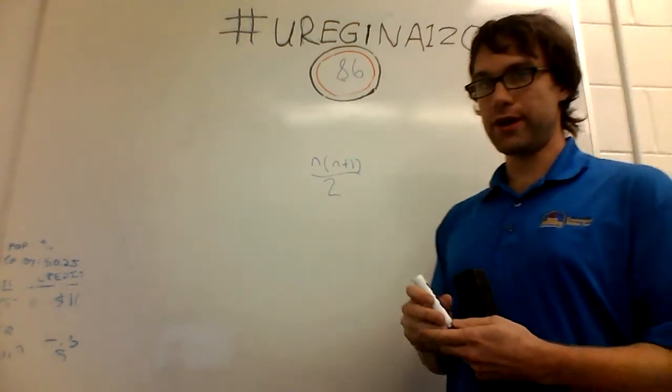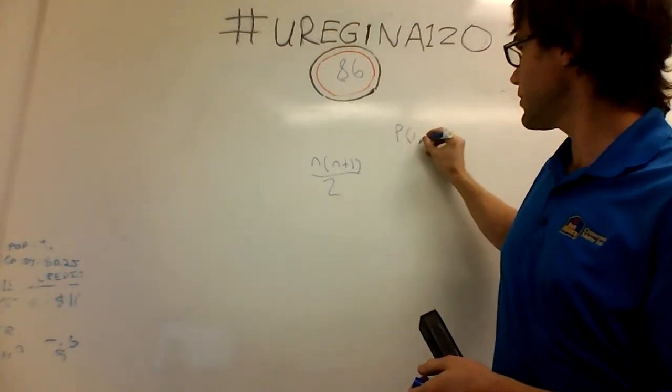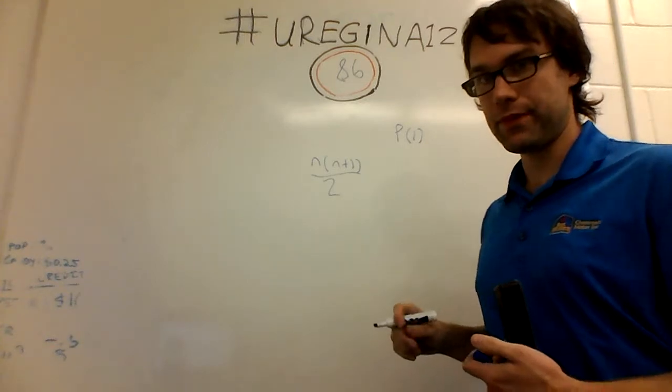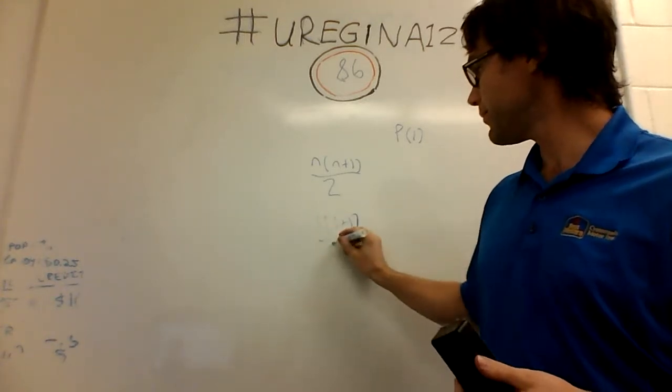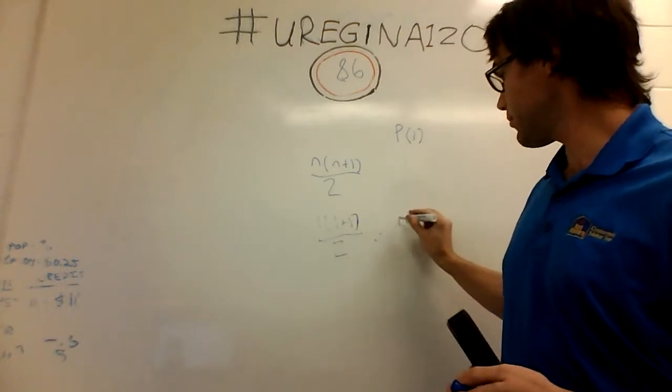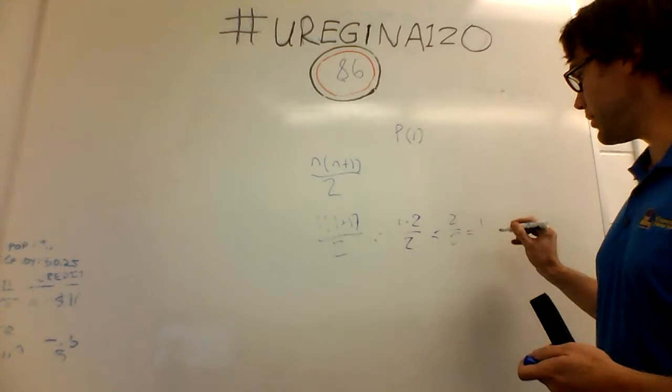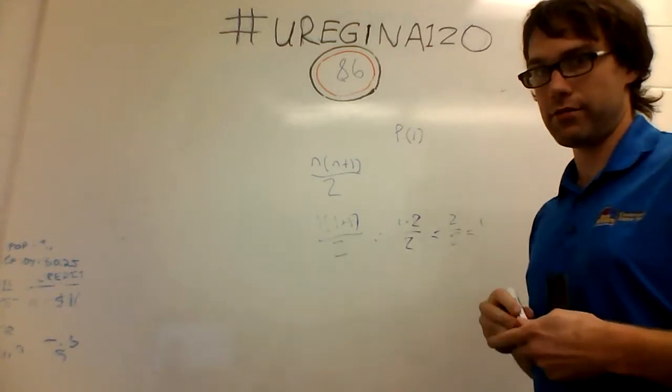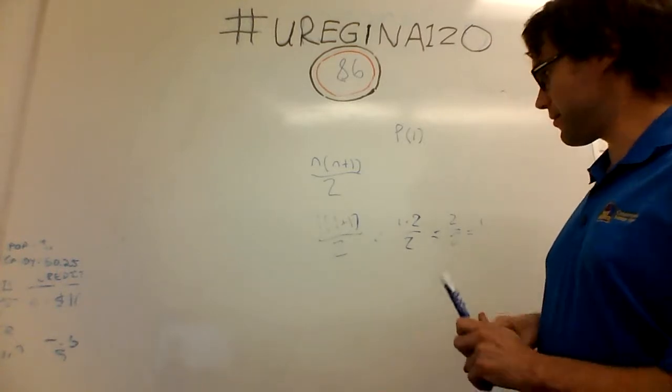So first of all, we're going to ask, is this true? Let's start with one. And as we saw before, one, one plus one, equals two, divided by two, plus two, divided by two, plus one, which is what the first one is. So one, on its own, the sum of numbers up until one is one, so this is true.